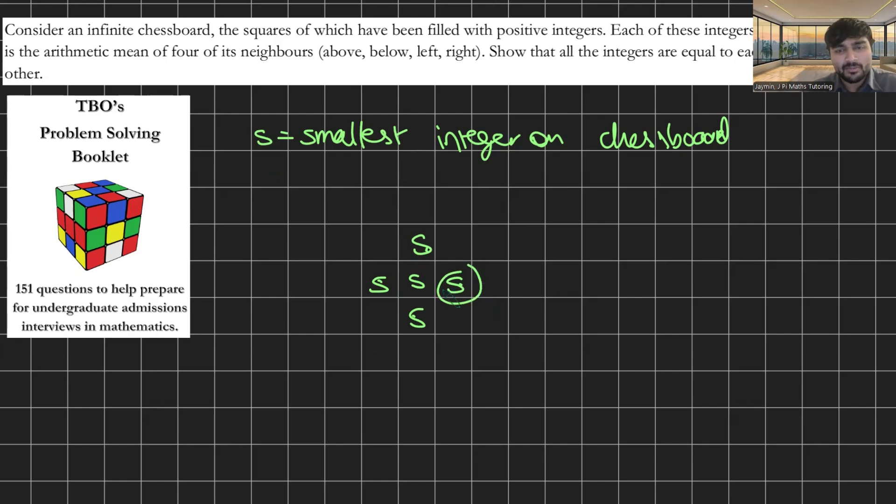But then we can just rinse and repeat this argument. If I look at this S now, again, using the exact same argument, all of its neighbours have to be S. And similarly, look at that S, all of its neighbours have to be S. If I look at that S, all of its neighbours has to be S. And so on. I can keep this going forever and ever and ever and fill up my chessboard to just have S's in. So that's the first proof of how you arrive that all the numbers must be the same.